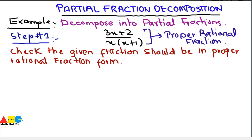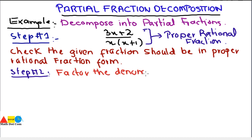So we need not use the long division method to convert this into proper rational fraction form. Step number 2 is: factor the denominator — make the factors of the denominator if it is not already in factorized form. Here we have x times (x plus 1), which is already in factorized form. So we have two factors: x and x plus 1, and the denominator is already factorized.